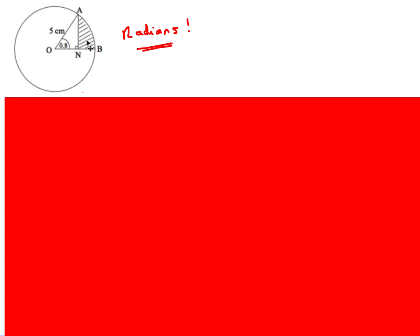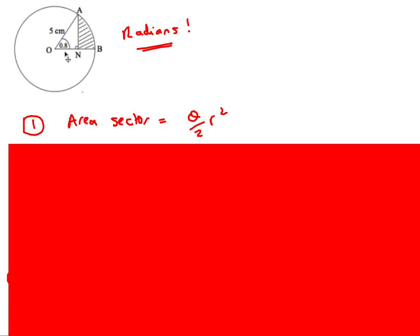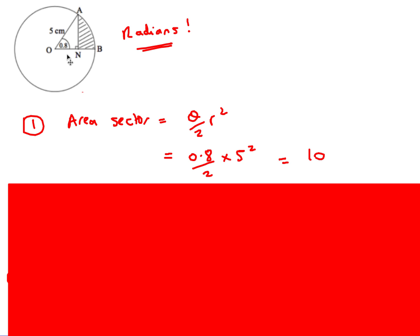Next question: find the shaded area. Start by finding the area of the whole sector using θ/2 × r². That's 0.8/2 × 5² = 10. That gives us the full sector area.